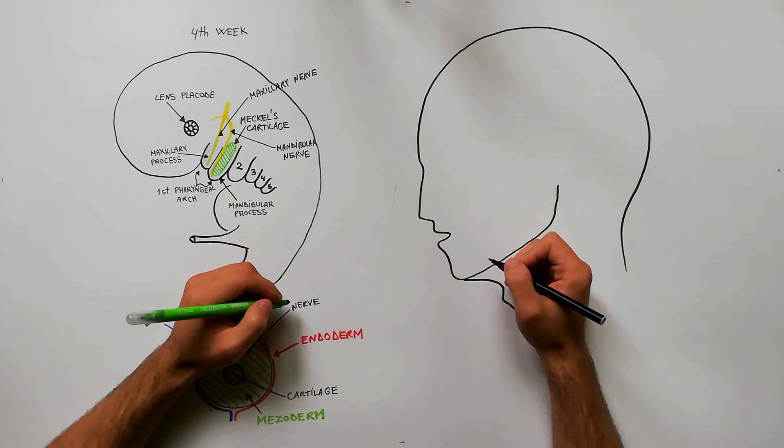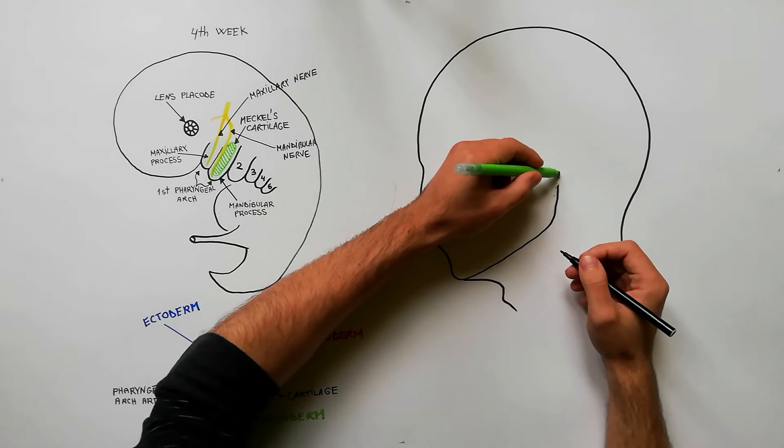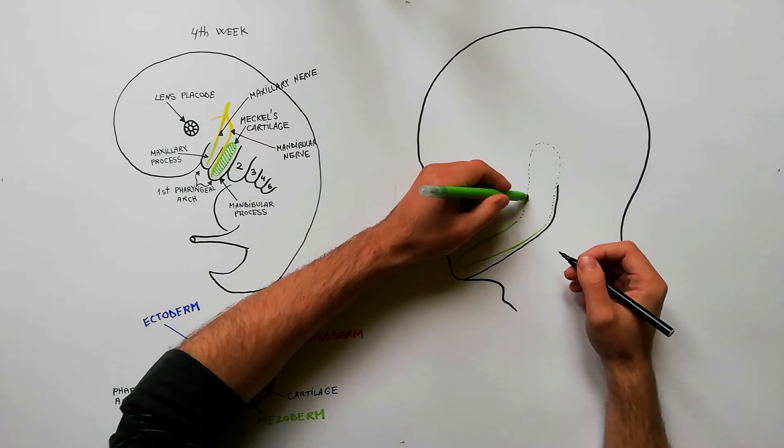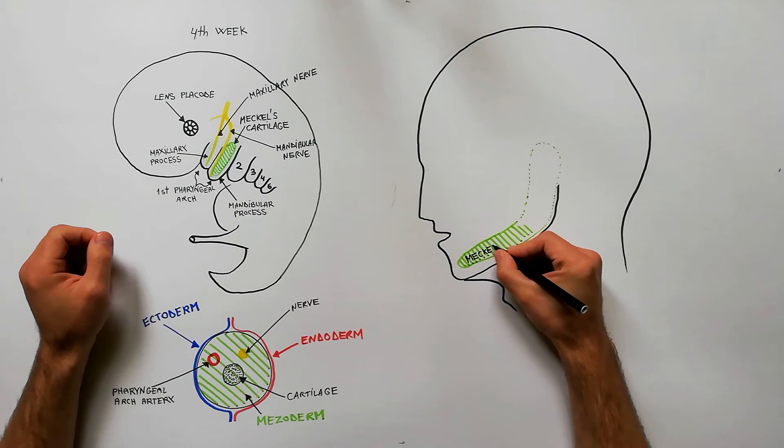On a new diagram we will indicate the structures derived from the first pharyngeal arch. The mandibular process of the first pharyngeal arch forms the Meckel's cartilage.